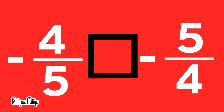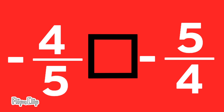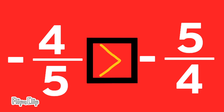Negative 4 fifths compared to negative 5 fourths. Negative 4 fifths is to the right of negative 1 on the number line, and negative 5 fourths is to the left of negative 1 on the number line. Therefore, negative 4 fifths is greater than negative 5 fourths.